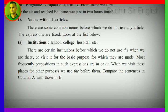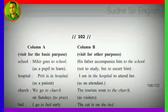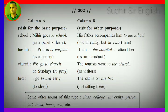But when we visit these places for other purposes, we use 'the' before them. Compare the columns: Column A — visit for basic purpose; Column B — visit for other purposes. School: 'Mihir goes to school' (as a pupil to learn — no article). But: 'His father accompanies him to the school' (not to study, but to escort him — so 'the school'). Hospital: 'Prithi is in hospital' (she is a patient — basic purpose). But: 'I am in the hospital to attend her' (as an attendant — other purpose). Church: 'We go to church on Sundays to pray.' But: 'The tourist went to the church as visitors.' Bed: 'I go to bed early' (to sleep). But: 'The cat is on the bed' (just sitting — other purpose).